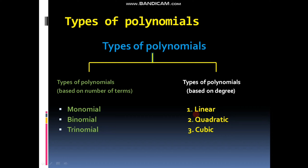If the degree of a polynomial is one it is called a linear polynomial. If the degree of a given polynomial is two it is called a quadratic polynomial. And if the degree of a polynomial is three it is called a cubic polynomial. So these are the types of polynomials which we have earlier studied.